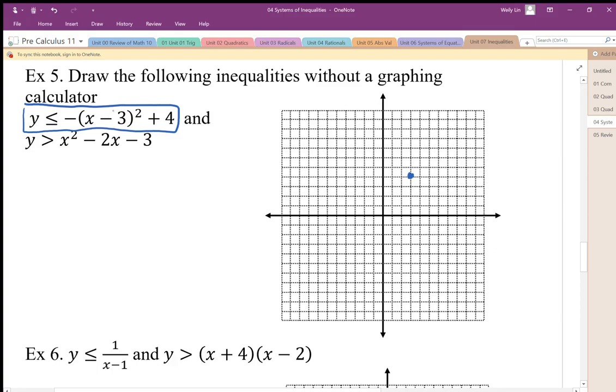For this one, it's probably easiest to use the zeros because we know there's a zero at positive 1. At positive 1, y equals 0, and at positive 5, y equals 0. Since it's equal to, we'll use a solid line.